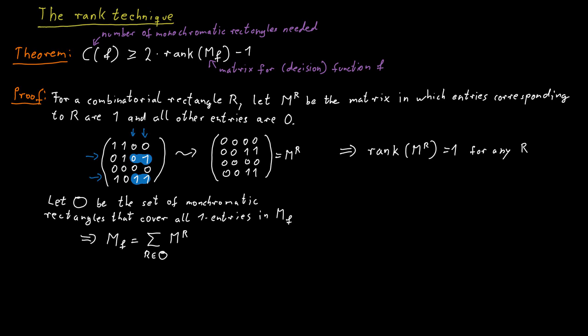There's an alternative way in which we can define or express MF, and that is by using the zero entries. So let's say Z is a set of monochromatic rectangles that cover the zero entries. How can we now express MF? We can express MF by starting with a matrix that has ones written everywhere and then we subtract all the rectangles that cover the zero entries.